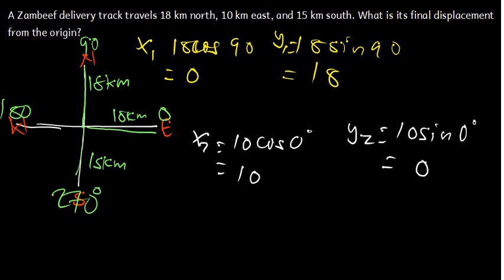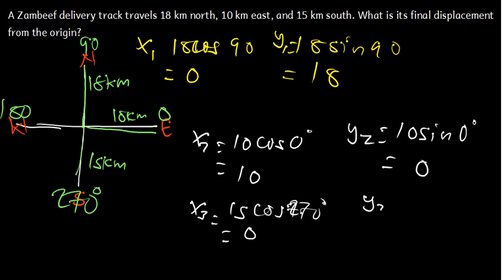For the third vector, 15 kilometers south: x3 = 15 cos 270° = 0. Then y3 = 15 sin 270° = −15.